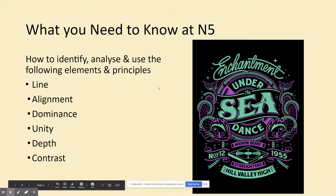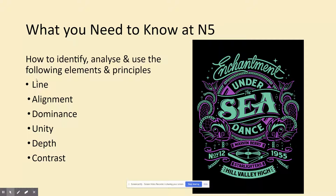Hi class. In today's lesson we are going to look in more detail at line, after the preceding lesson which gave a brief introduction to these different elements and principles. So as discussed, line is the only one of these that we would describe as an element — it's a kind of an ingredient, a thing that we would put onto the page. Things like alignment, dominance, unity, depth and contrast might all be ways that we would think about what we did with lines. We'll learn more about them later.